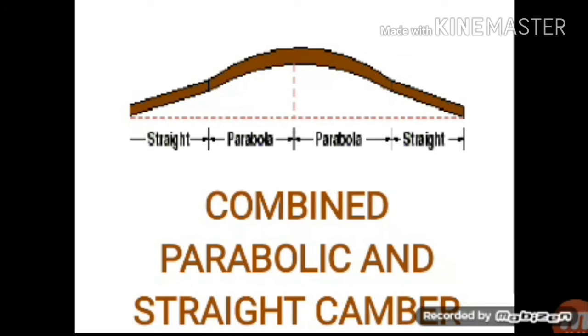Combined Parabolic and Straight Camber. This is a parabola and straight line. This is a road. This is a cross-section. This is a parabola in the center. This is a parabola in the corner. This is a combined parabolic and straight camber.